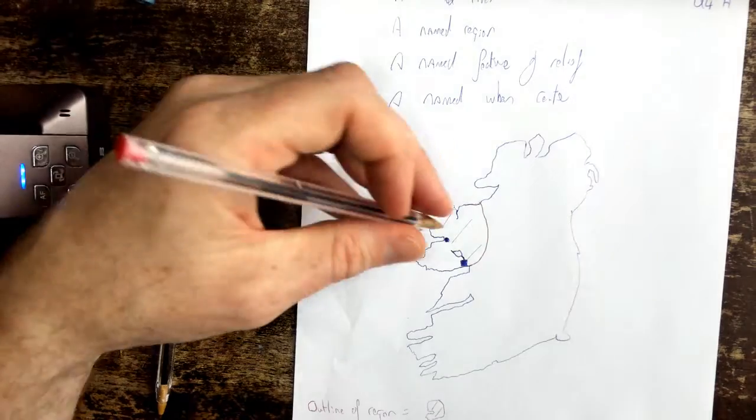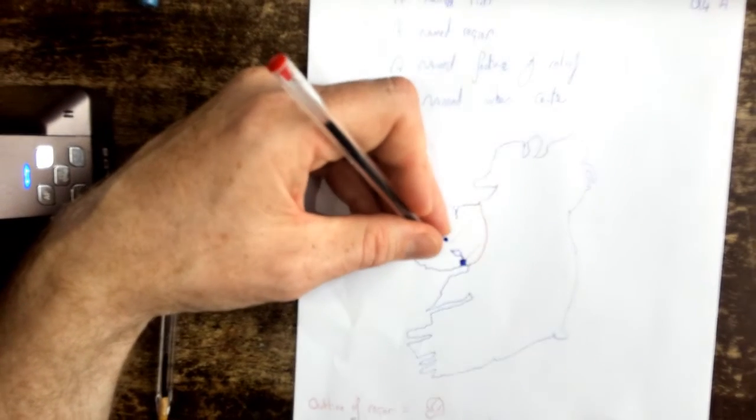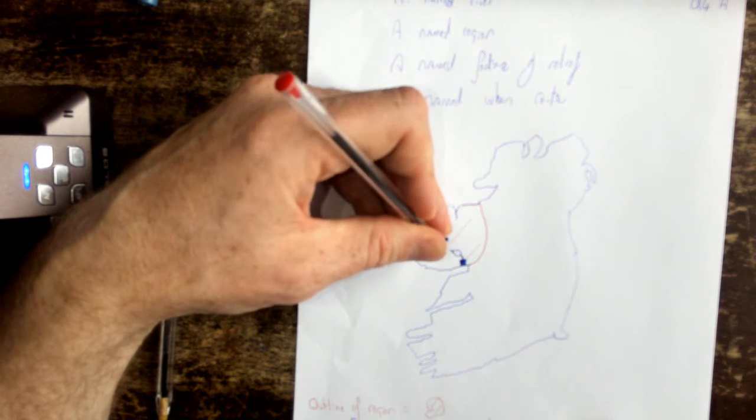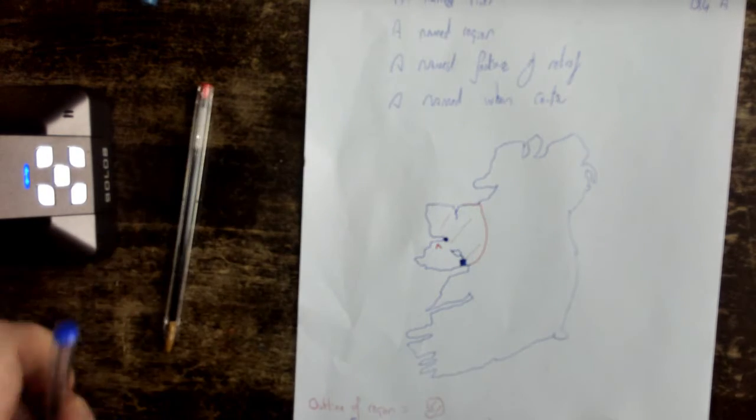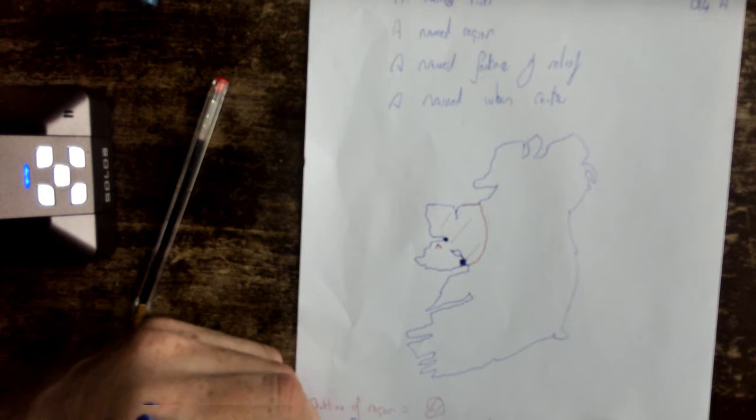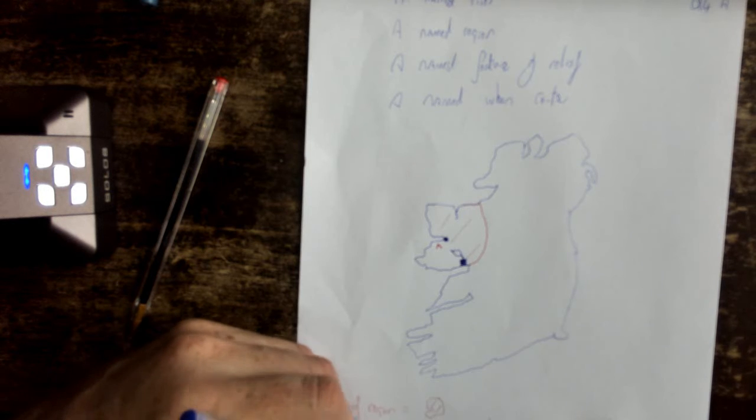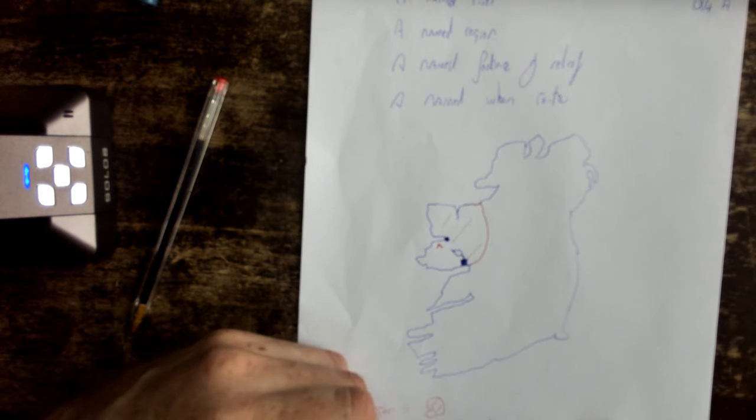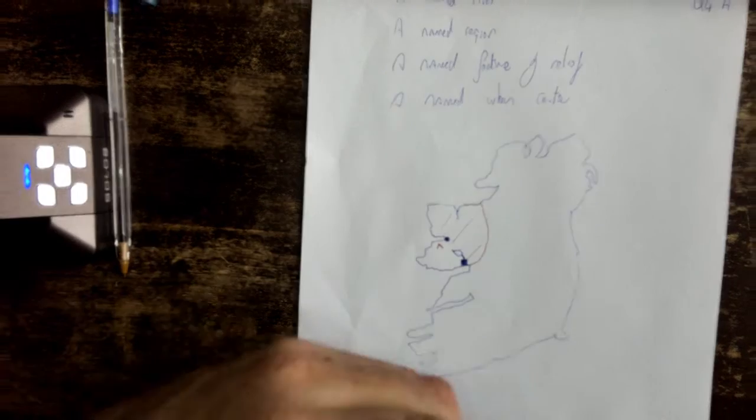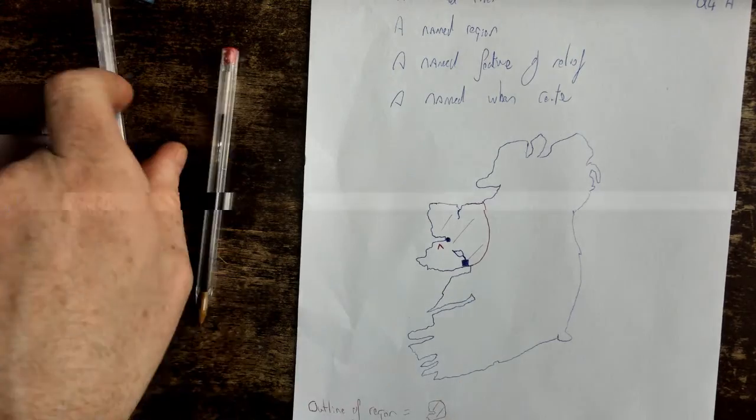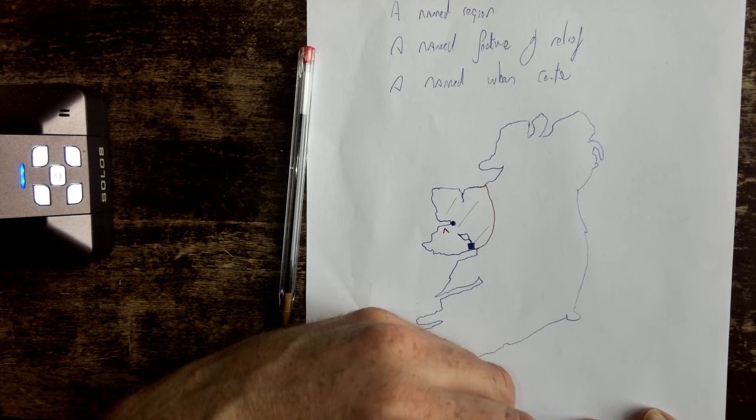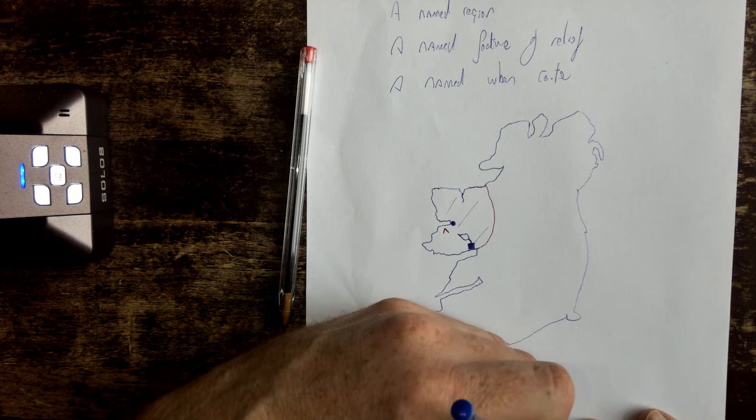And the last feature that I want to put on the map, in the shadow of Westport, is my mountain range. And the mountain range I'm going to include is Croagh Patrick, named feature of relief Croagh Patrick.